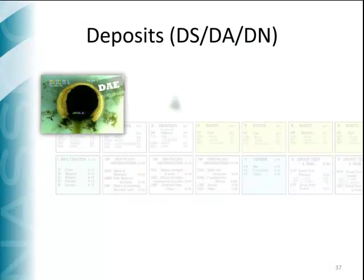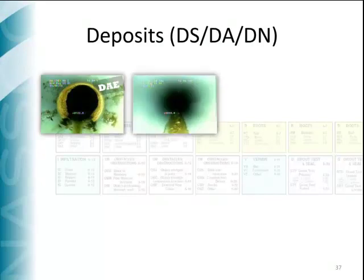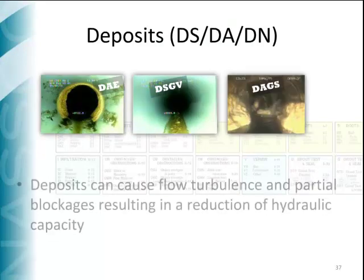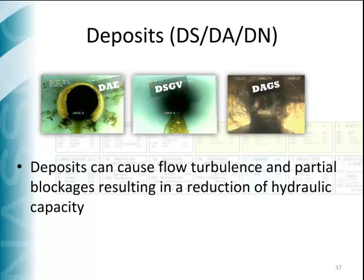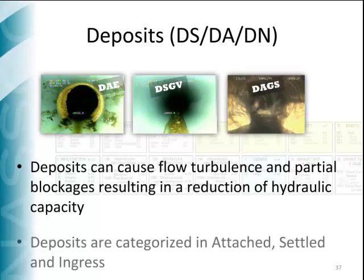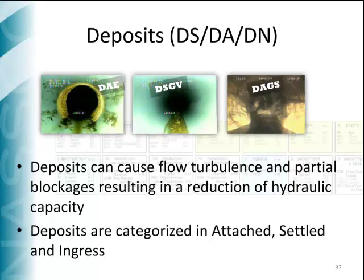Deposits cause blockages and reductions in hydraulic capacity. The deposits group in PACP is divided into DS for deposits settled, DA for deposits attached, and DN for deposits ingressed. The images shown on top show a deposit attached incrustation, a deposit settled gravel, and a deposit attached grease.